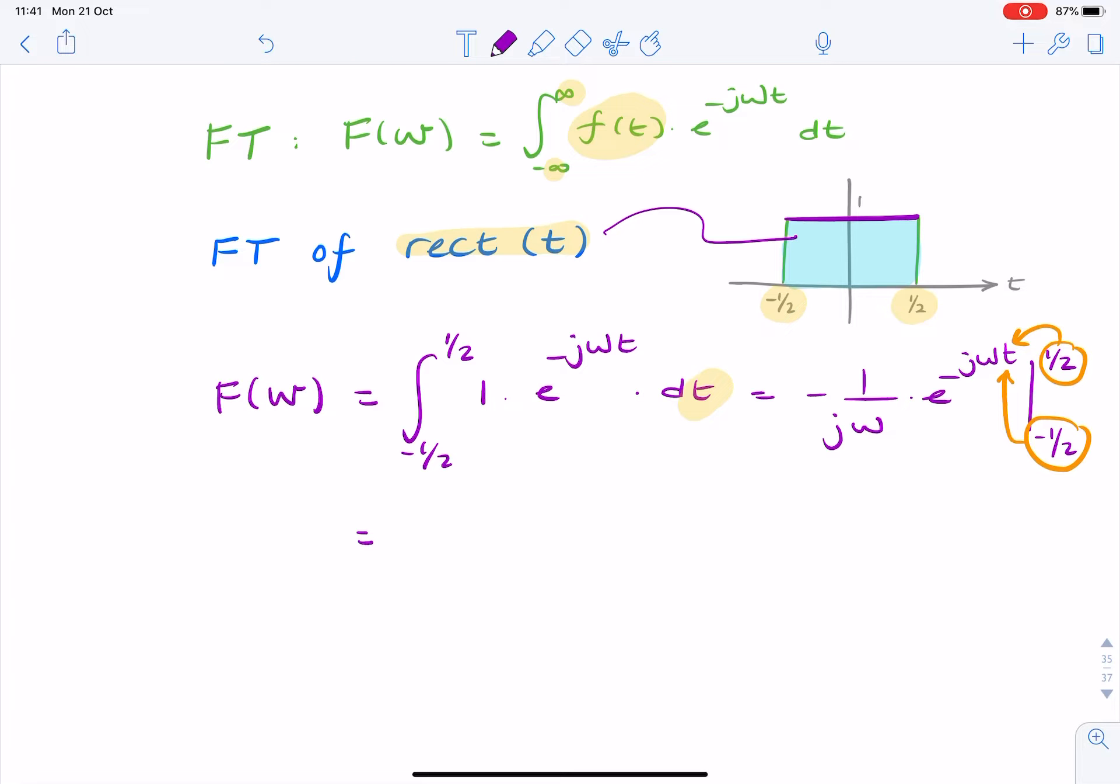So we can now say this is minus one over j omega, times e to the minus j omega over two, minus e to the minus minus j omega over two. And the minus minus, we can simply remove.